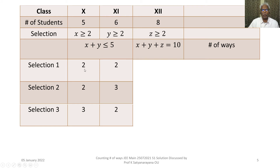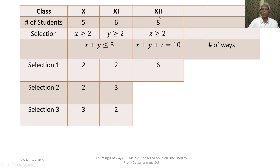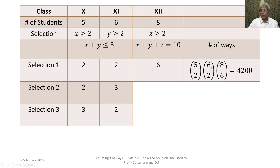For Selection 1, having chosen 2 + 2 = 4 students, we choose z = 6 from class 12 so that x + y + z = 10. By the product rule, the number of ways is 5C2 × 6C2 × 8C6, which equals 4200.